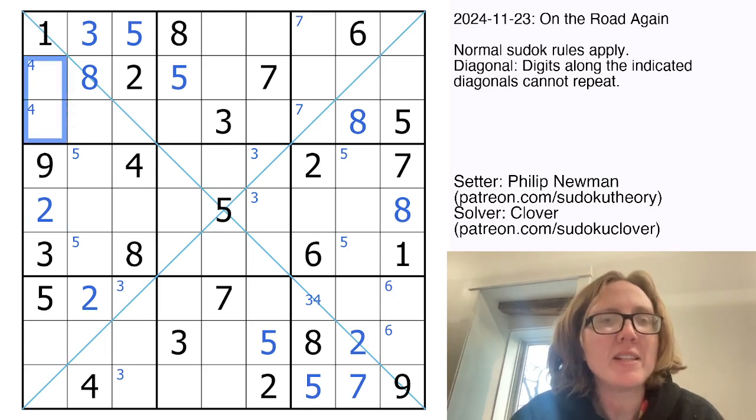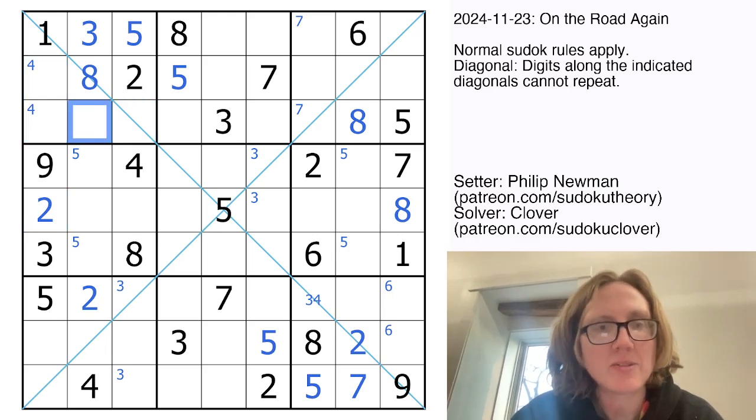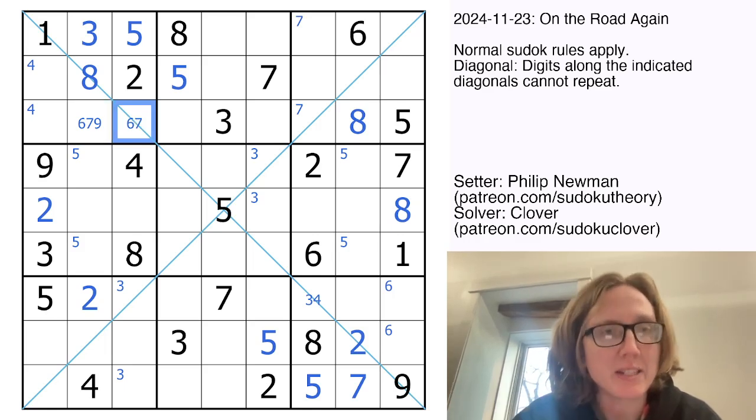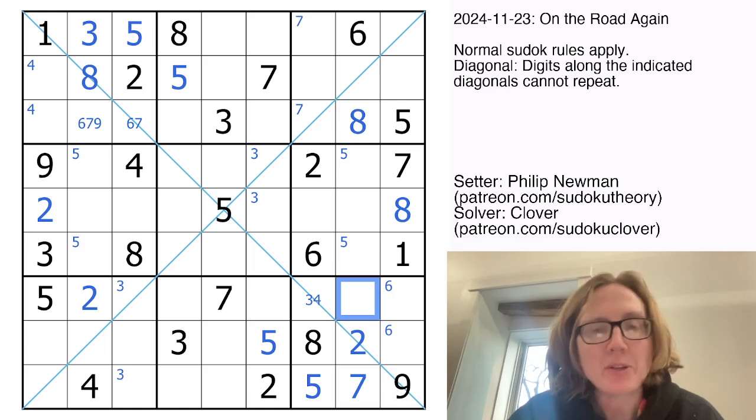So what do I still need in this region? So I need 4, 6, 7, and 9. So these cells can only contain 6, 7, and 9. I can eliminate 9 from there because of the diagonal. In this region, I need 1, 3, 4, and 6. Oh, interesting. Okay, so I'm noticing a symmetrical deduction in both of these regions, actually. So I have a 1 right here that eliminates 1 from those cells, so my 1 can only go in that position.